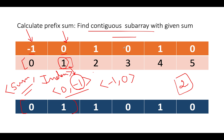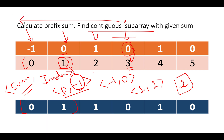Next, at index 2, prefix sum is 1. It doesn't exist in the map, so we add map[1] = 2. At index 3, prefix sum is 0 again, occurring at index 3. We check the map: 0 exists at index -1. All four elements from index 0 to 3 have no net impact on the prefix sum, meaning equal 0s and 1s. Length = 3 - (-1) = 4, which is better than 2. We update max length to 4.